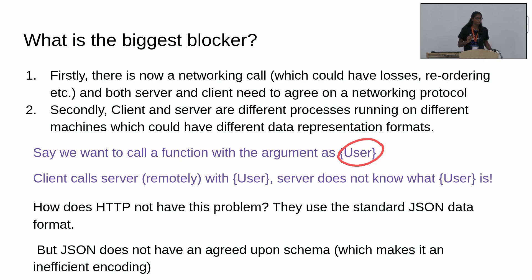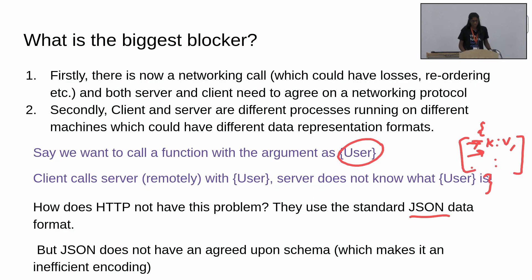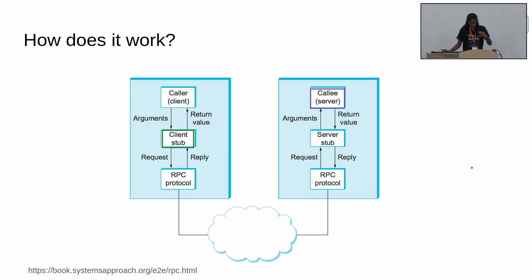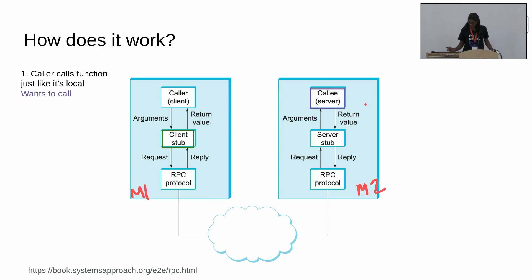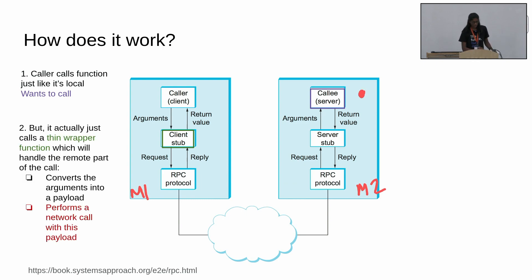Why does HTTP not have this problem? That's because HTTP uses JSON format. JSON is a pre-agreed format that everyone agrees upon — you follow the key-colon-value pattern. That is how both sides agree on the data structure. So let's see how RPC happens between two machines: machine one is the client which calls a function, and that function actually exists on machine two.